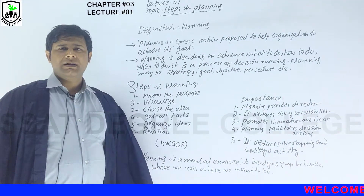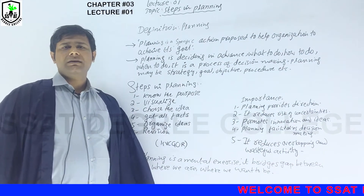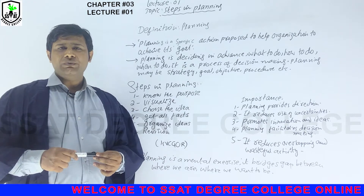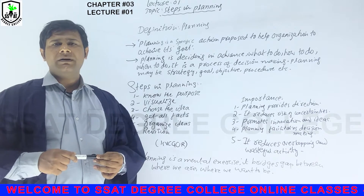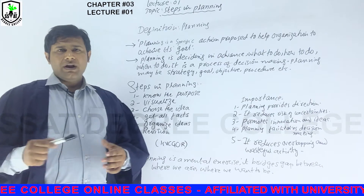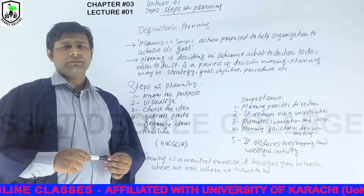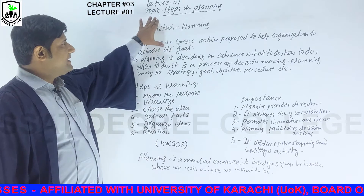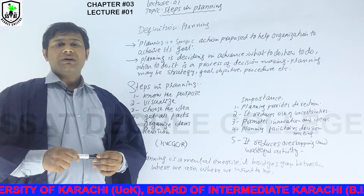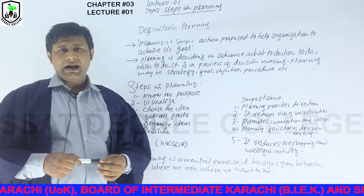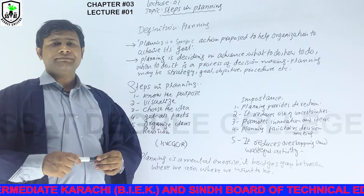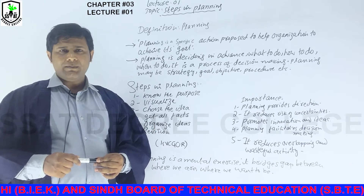Dear student, I am going to start chapter number three. As we have studied in chapter two, the last topic you remember was barriers in communication. Now we are going to start chapter number three. Our first topic is steps in planning — what is planning, and what sort of steps we should follow in the planning procedure. They might ask you questions in a different way, so let's start with the definition of planning.